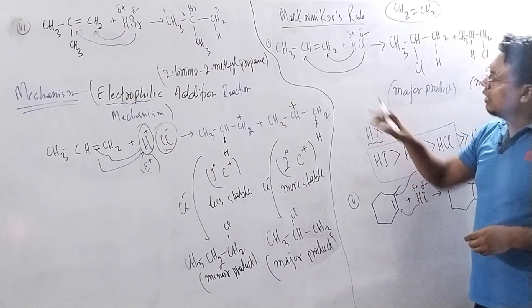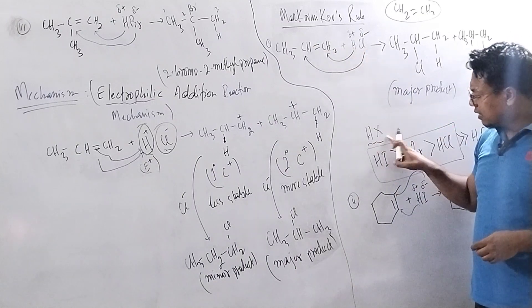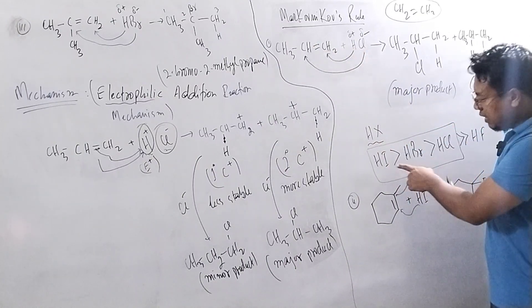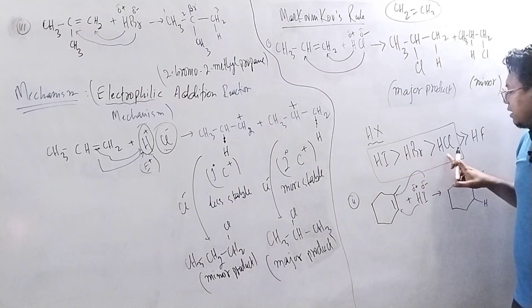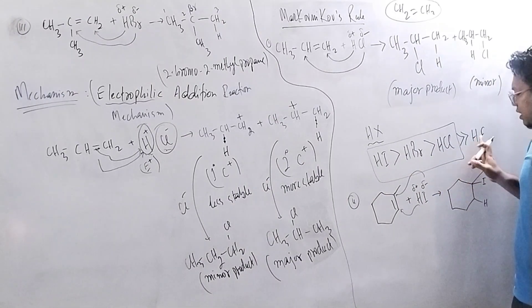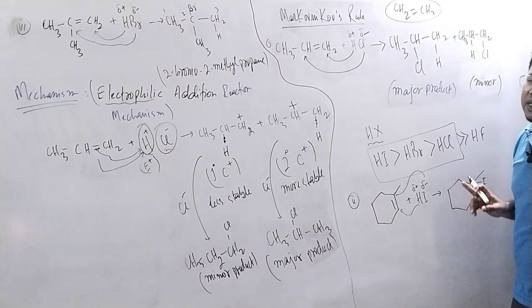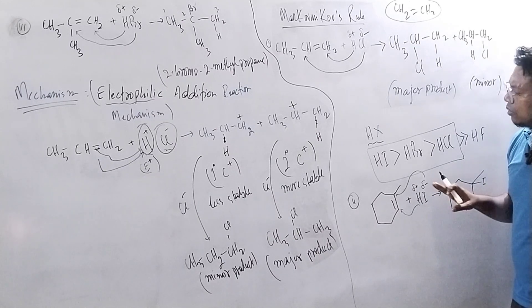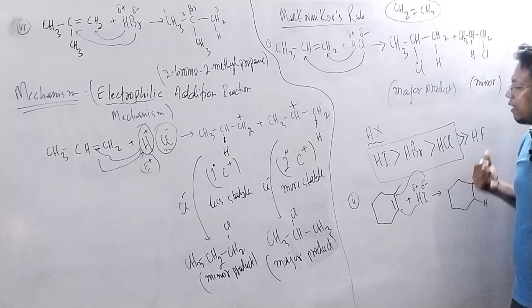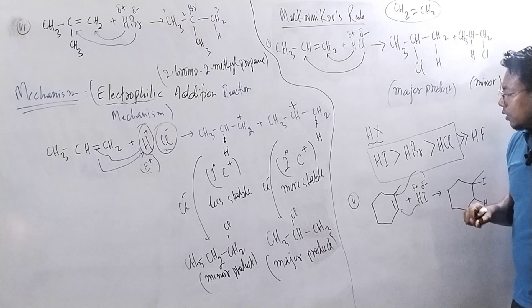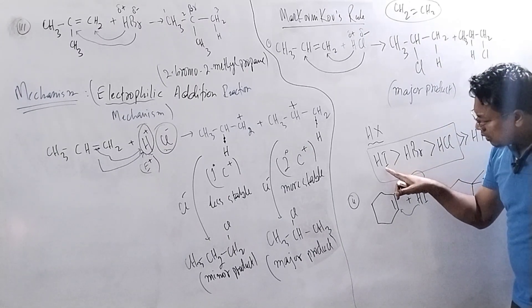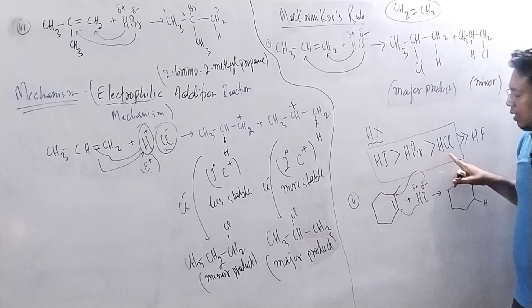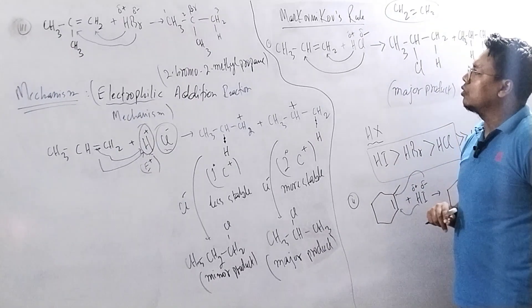So in the addition of HX, the reactivity order is HI > HBr > HCl > HF. HF is very, very less reactive, so we do not include HF in Markovnikov's rule or Markovnikov's reaction. Usually we take HI, HBr, and HCl in Markovnikov's rule.